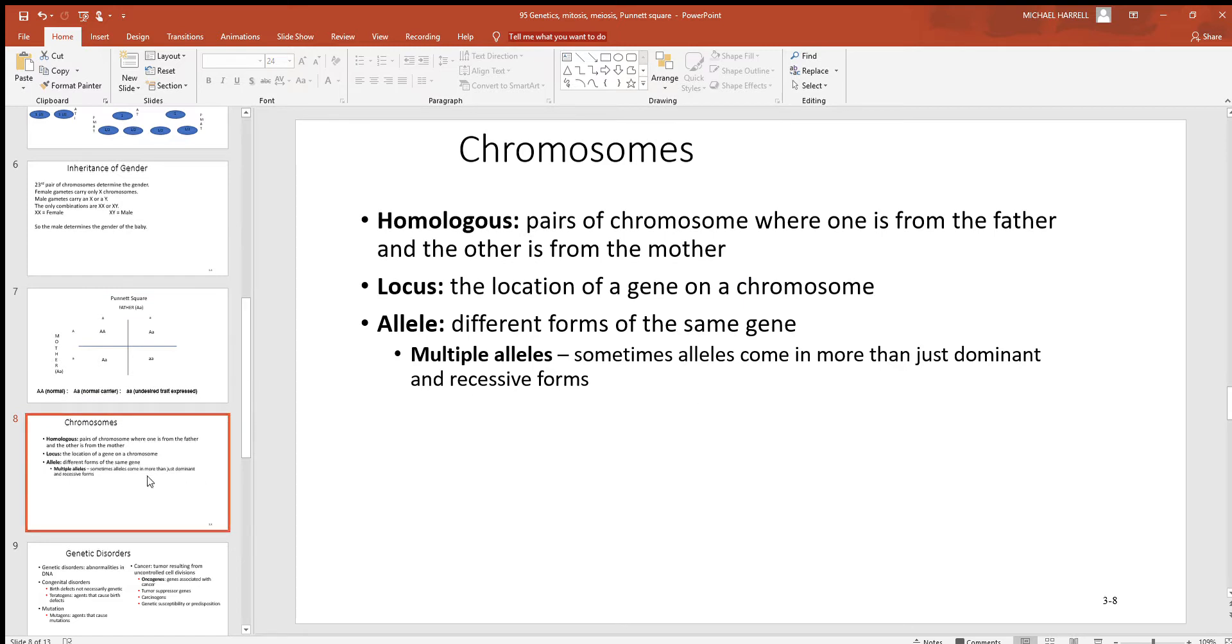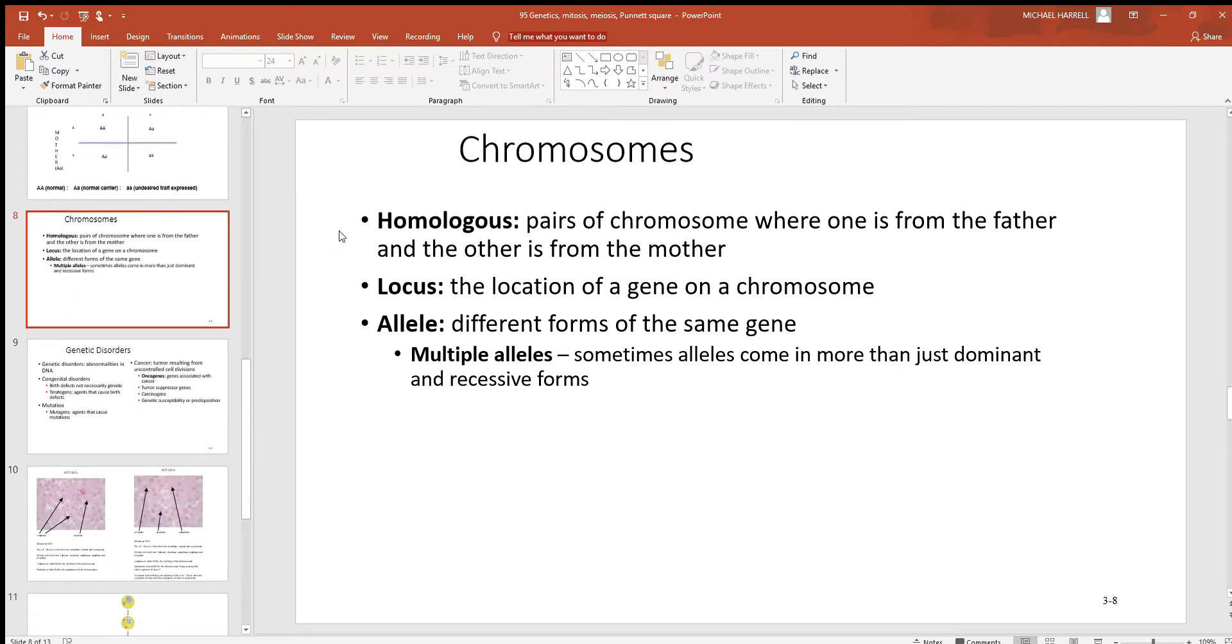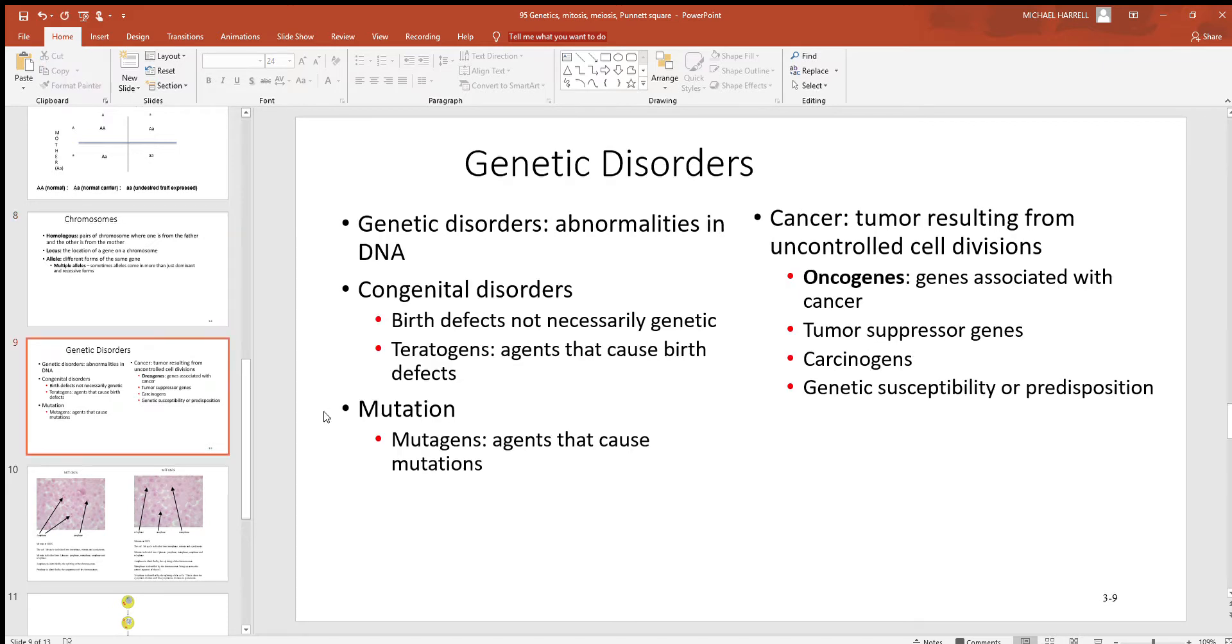We've seen this information with these chromosomes before. Homologous chromosomes are pairs where one's from the father, one's from the mother. The locus or loci, think of this as the location of a gene on a chromosome. There are many genes on individual chromosomes. Alleles are different forms of the same gene.